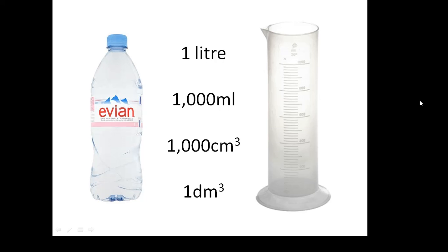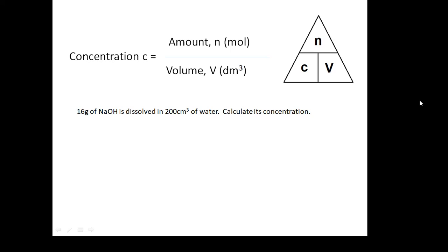It's the amount dissolved in a thousand centimetres cubed, in a litre. When I say the amount, it's the number of moles. So it's the number of moles per decimetre cubed, per litre. If you look at this triangle here, you might find it very useful to learn: N, C, and V. The concentration C is the number of moles divided by the volume.